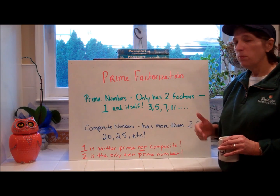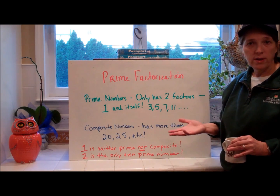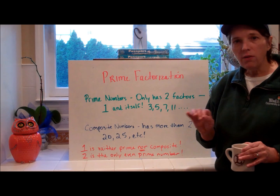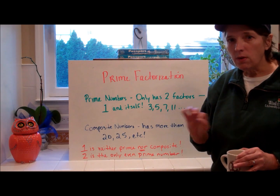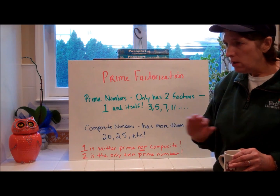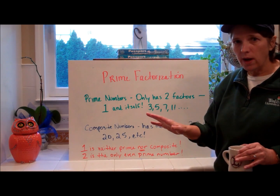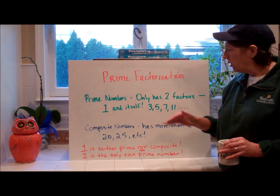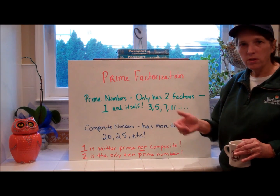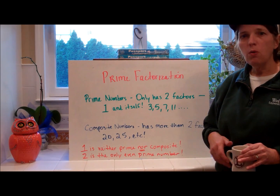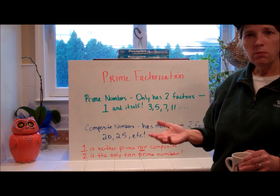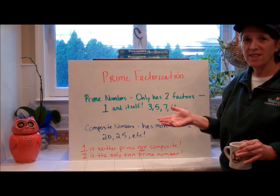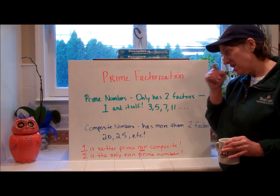For instance, the number three — one times three is three, and that's all you can do. No fractions or decimals are involved; fractions are not prime numbers. Three, five, seven, eleven, and so forth are prime numbers because they only have factors of one and themselves.